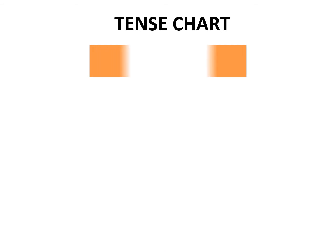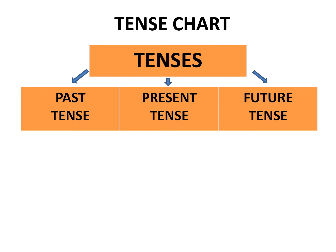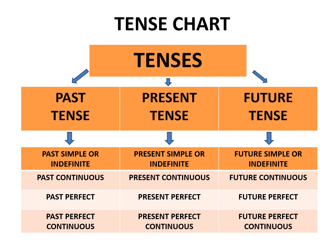Flowchart of Tense. Tenses are divided into three types: past tense, present tense, and future tense. Past tense is subdivided into four aspects: past simple or indefinite, past continuous, past perfect, and past perfect continuous. Present tense is subdivided into present simple or indefinite, present continuous, present perfect, and present perfect continuous. Future tense is subdivided into future simple or indefinite, future continuous, future perfect, and future perfect continuous.